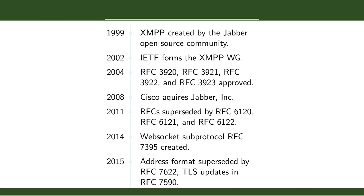XMPP was first created in the late 90s by the Jabber open source community. You'll hear 'Jabber' used a lot — it's often used interchangeably with XMPP. In the early 2000s it moved toward IETF standardization. Then in the late 2000s, Cisco acquired the original Jabber company, which is why the Jabber name fell out of favor. They trademarked the name, and XMPP became really what the protocol itself was known as.